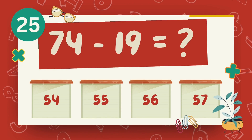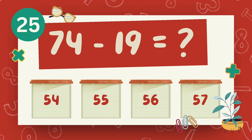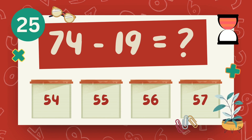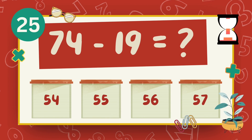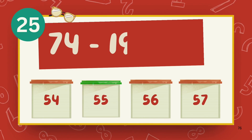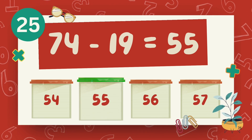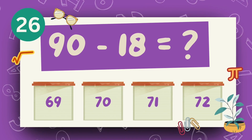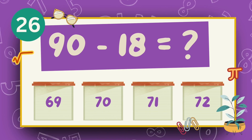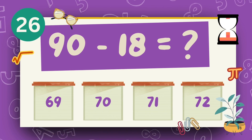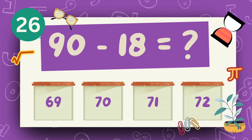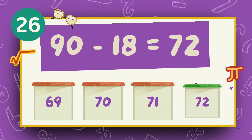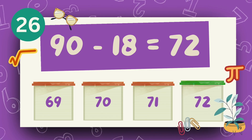What is 74 minus 19? The answer is 55. What is 90 minus 18? The answer is 75.